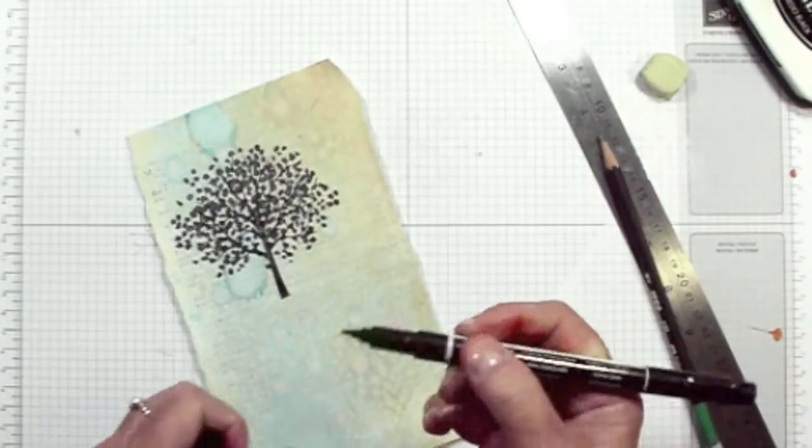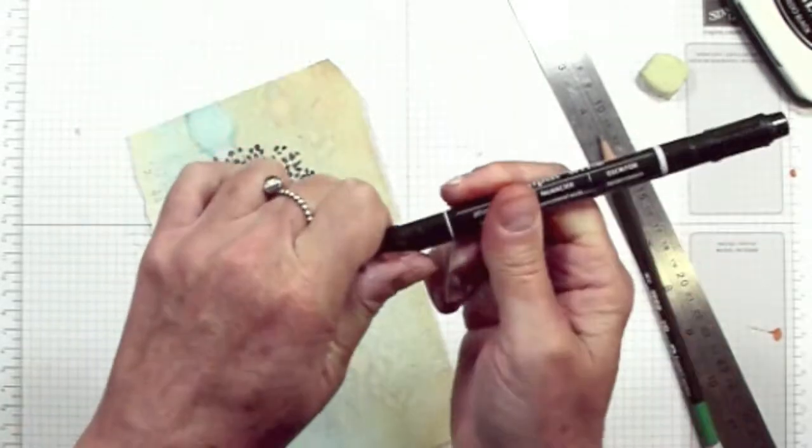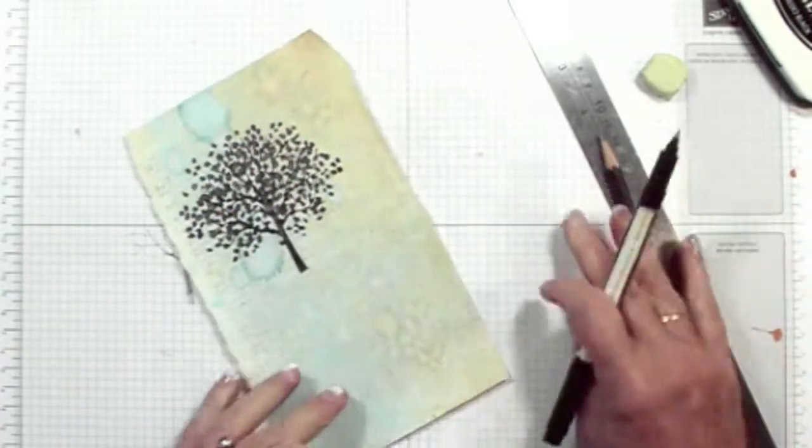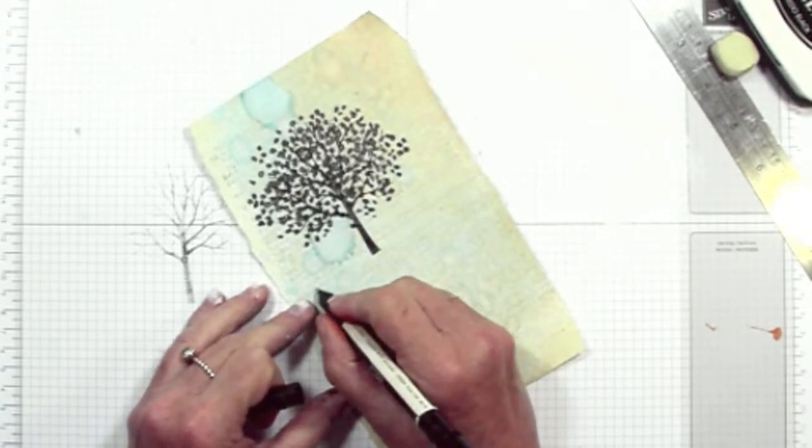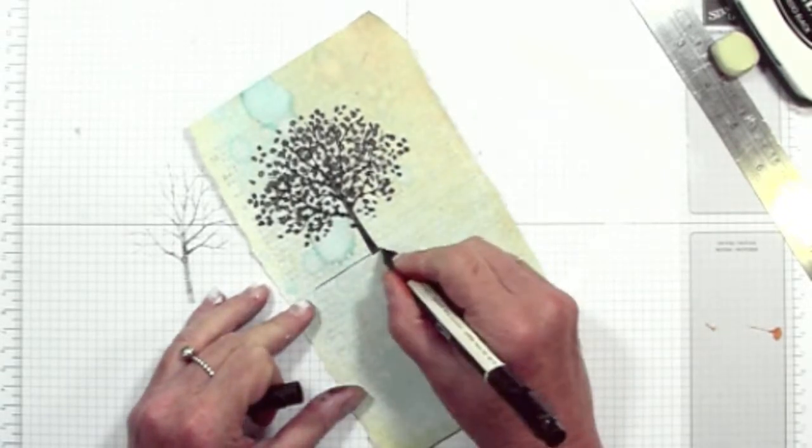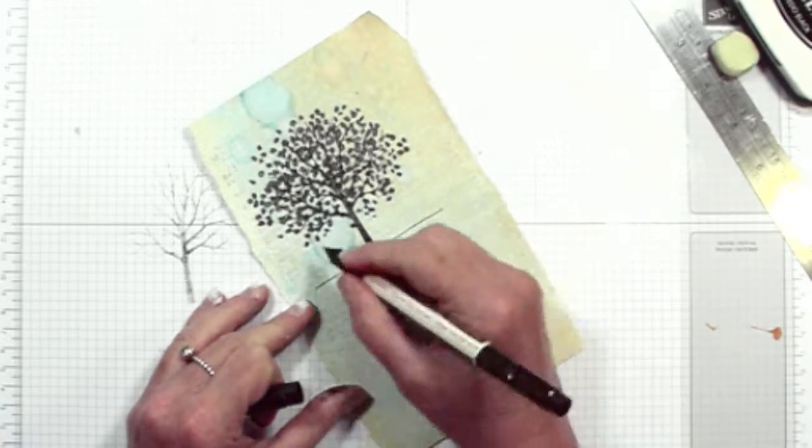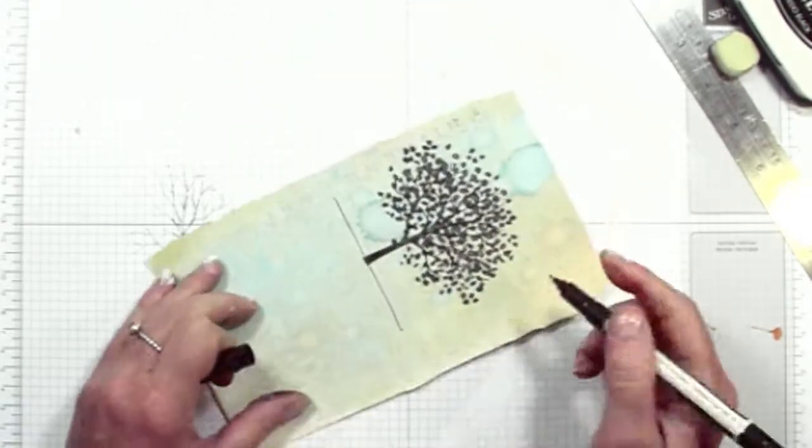Okay, so take the Stampin' Write marker and you'll need the fine end. And just draw a line across from dot to dot. Now I use the text underneath as a bit of a guide for keeping them straight.